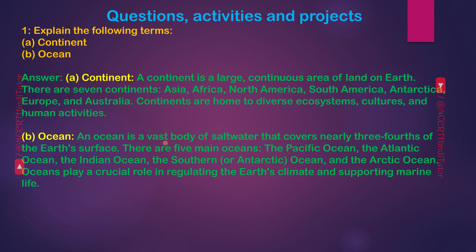An ocean is a vast body of salt water that covers nearly three-fourths of the Earth's surface. There are five main oceans: the Pacific Ocean, the Atlantic Ocean, the Indian Ocean, the Southern or Antarctic Ocean, and the Arctic Ocean. Oceans play a crucial role in regulating the Earth's climate and supporting marine life.